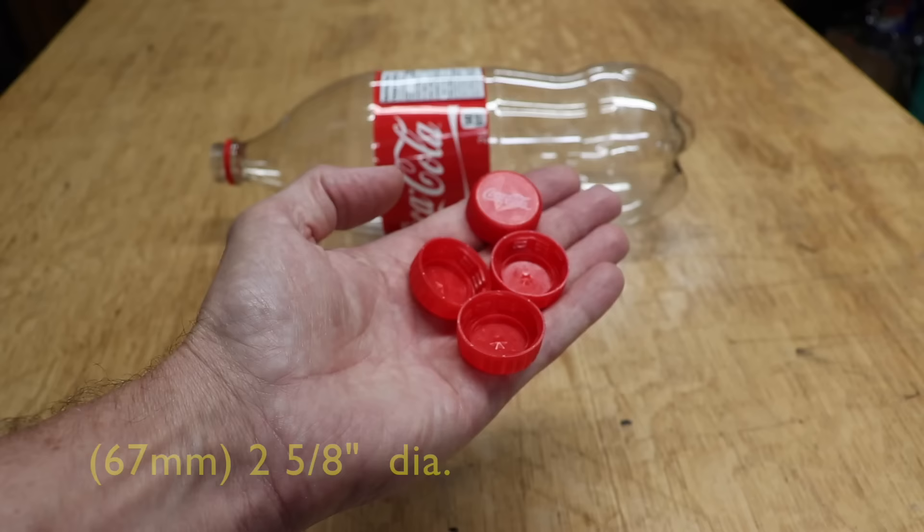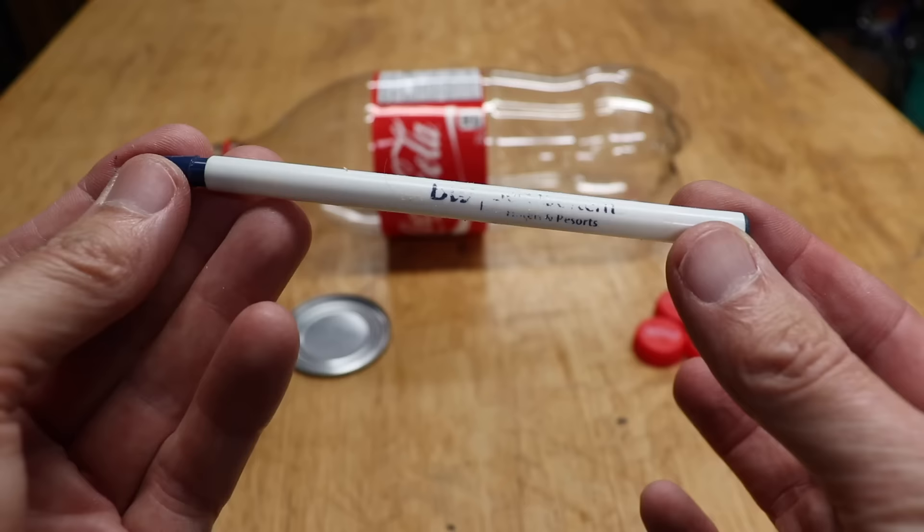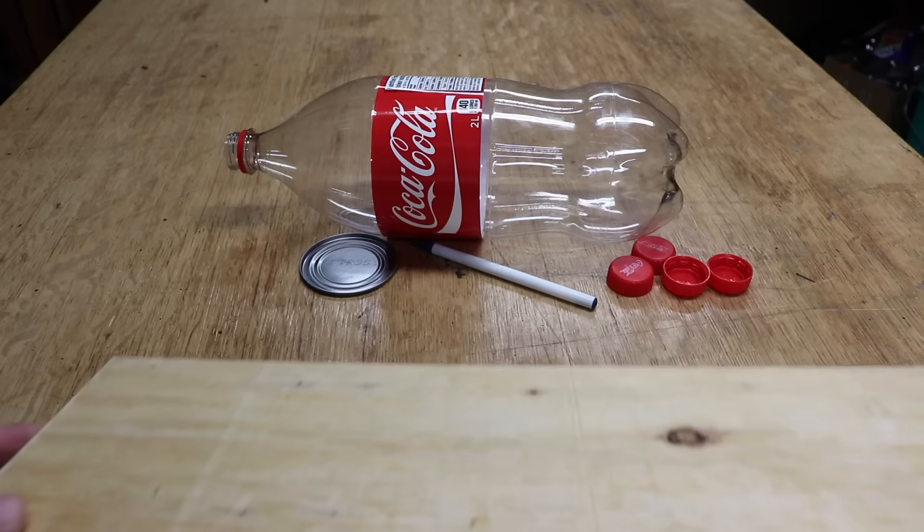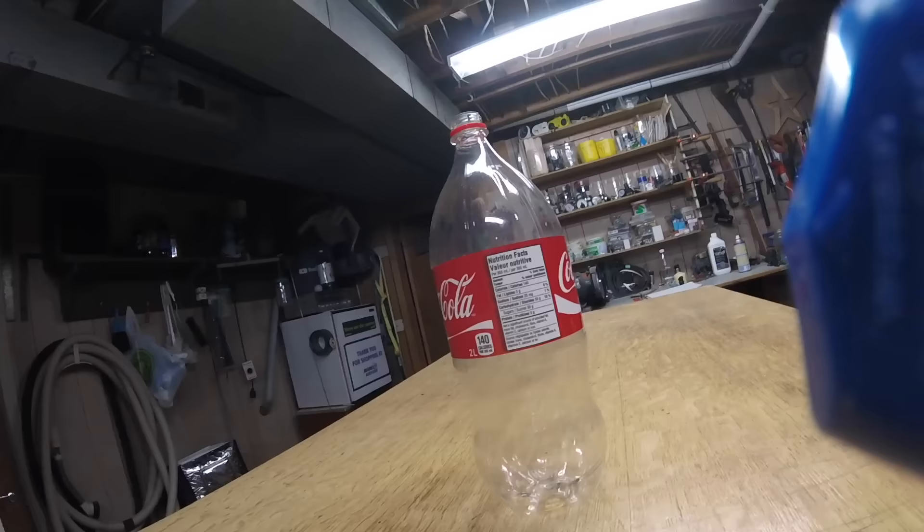Okay, for this trap you're going to need a 2 liter coke bottle, two soup can lids, four pop bottle lids, a pen and all you're going to need from it is the tube, and a piece of wood for the base.